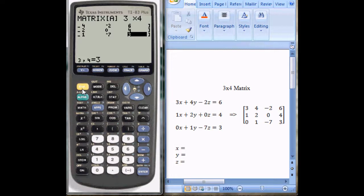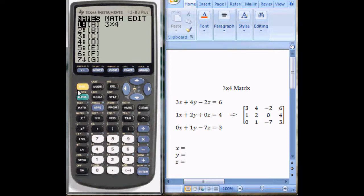Once this is done, press your 2nd key and quit. Go back into the matrix by pressing 2nd, and the X inverse matrix is right over that key.